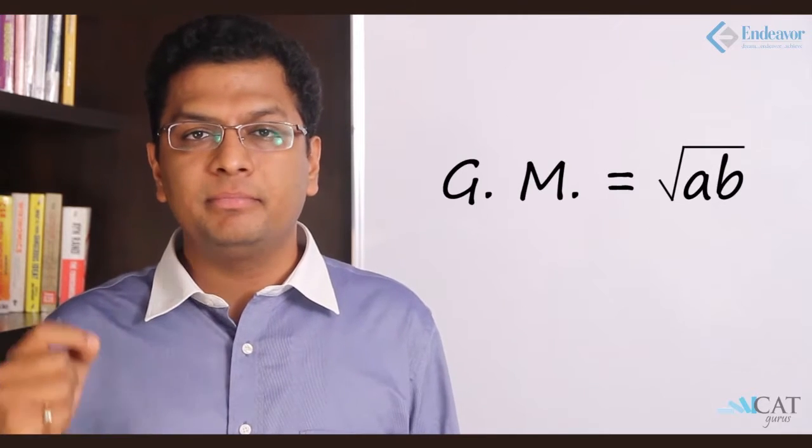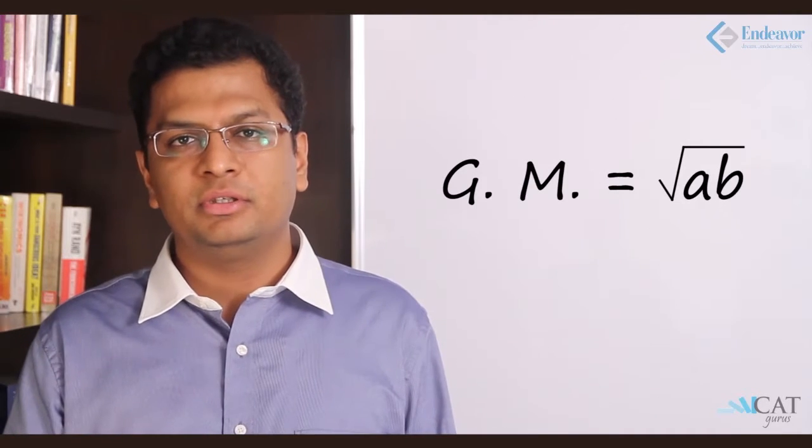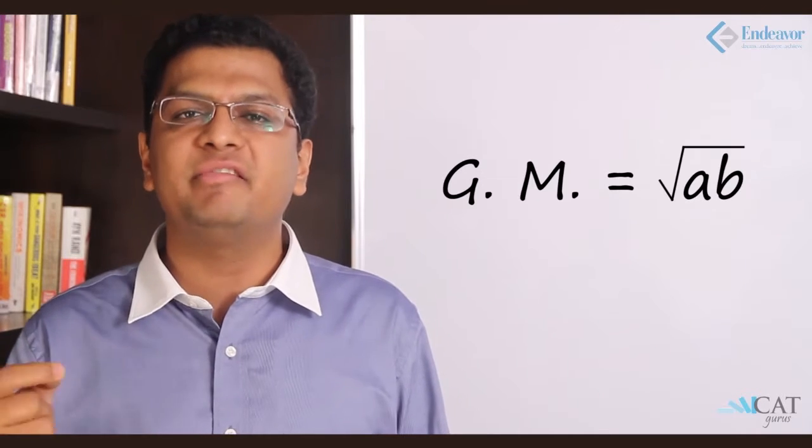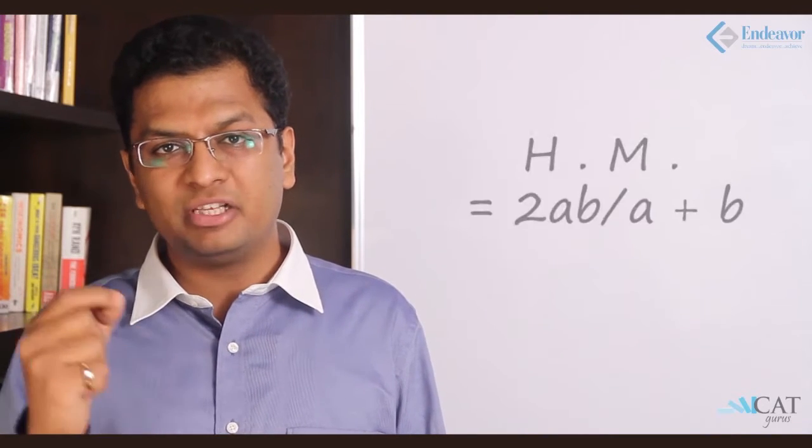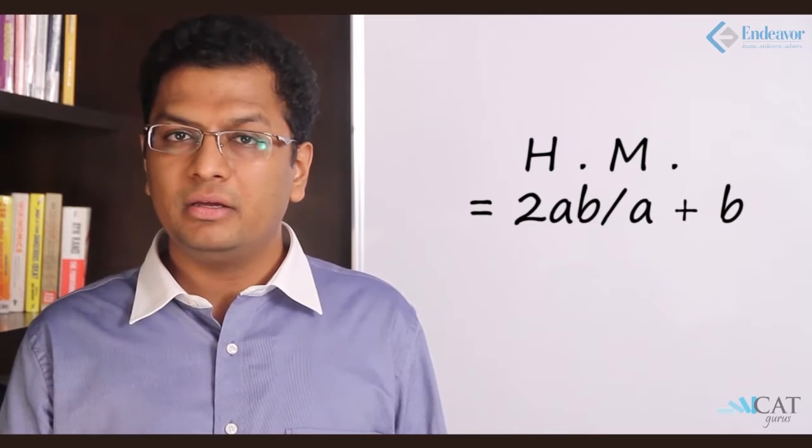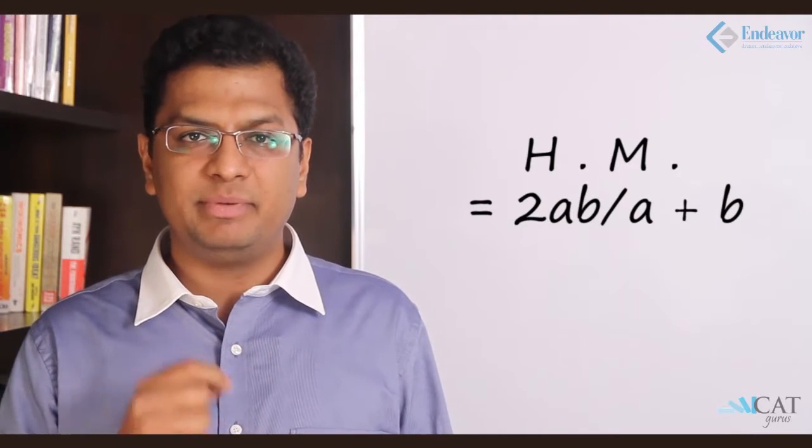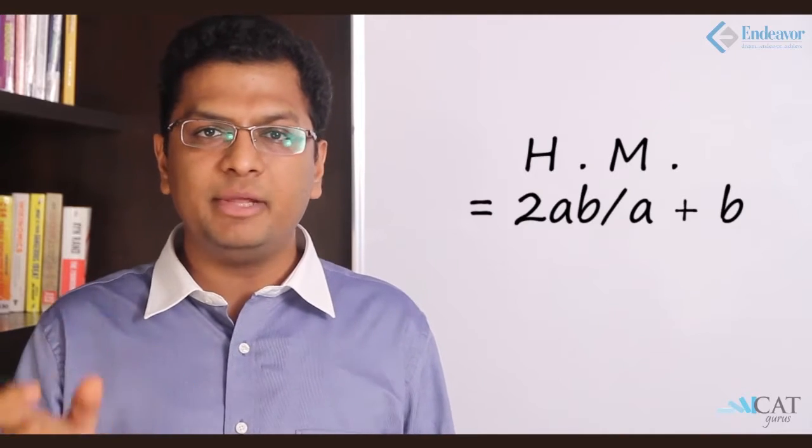Geometric mean is nothing but the mean of the product of two numbers. The product of two numbers a and b is ab, so root of ab will give me the geometric mean. Harmonic mean is the mean of the inverse of two numbers. If the two numbers are a and b, the inverse are 1/a and 1/b. If we find the average of 1/a and 1/b, it is (a+b)/2ab. Then we invert it back, so it becomes 2ab/(a+b)—this is the harmonic mean of a and b.